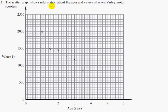Question 3. The scatter graph shows information about the ages and value of 7 Vali Motor Scooters. On the y-axis you've got the value in pounds and on the x-axis you've got the ages in years.